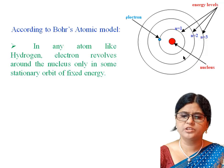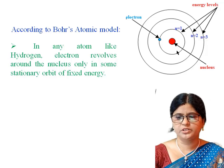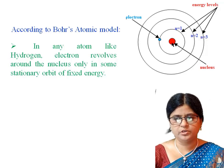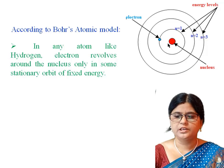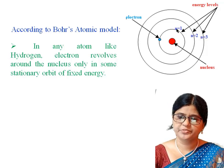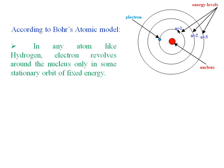Electrons revolve around the nucleus in fixed stationary orbits. These correspond to fixed energy levels: N1, N2, and N3 energy levels.